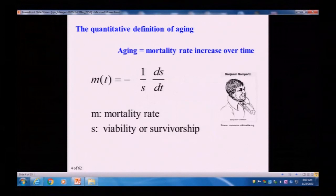We also normalize by the viability itself, so it's a normalized decline rate of viability, and that's the mortality rate. So this is very intuitive definition of a mortality rate. Basically, it's a normalized chance of dying. If the normalized chance of dying of any species, including us, is increasing or decreasing over time, that's aging.